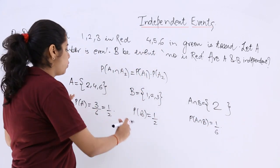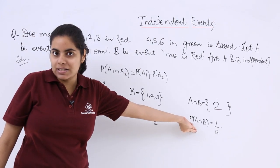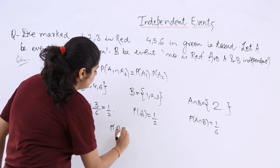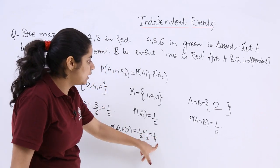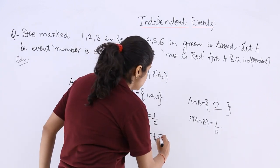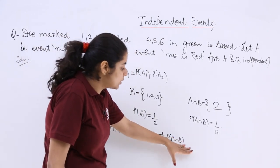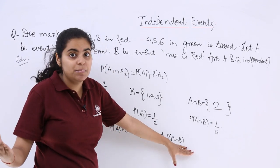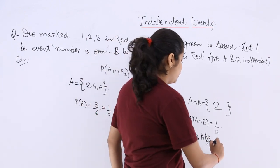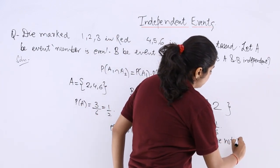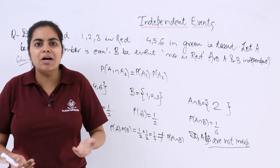Now we check whether the individual probabilities multiplied together give the same result as the simultaneous occurrence. P(A) multiplied by P(B) is 1/2 × 1/2 = 1/4. But 1/4 is not equal to 1/6, which is P(A∩B). Since the product of individual probabilities does not equal the probability of their intersection, A and B are not independent.